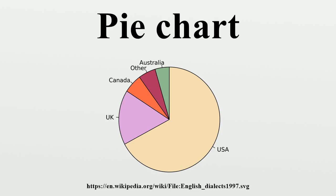A 3D pie chart, or perspective pie chart, is used to give the chart a 3D look. Often used for aesthetic reasons, the third dimension does not improve the reading of the data. On the contrary, these plots are difficult to interpret because of the distorted effect of perspective associated with the third dimension. The use of superfluous dimensions, not used to display the data of interest, is discouraged for charts in general, not only for pie charts.